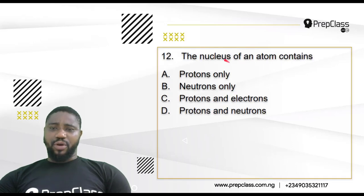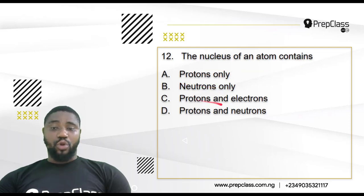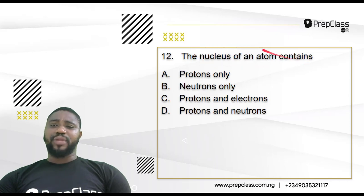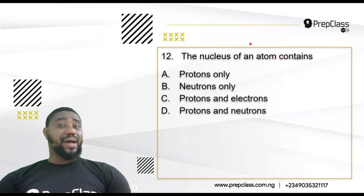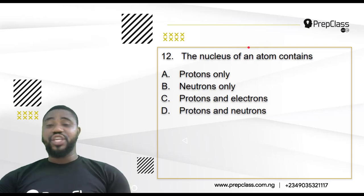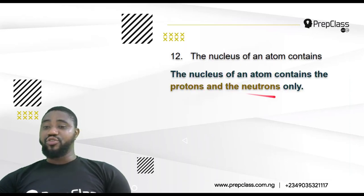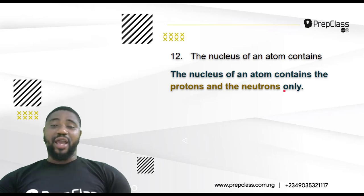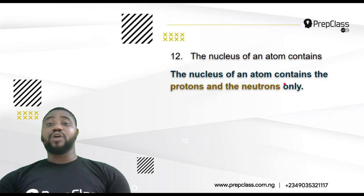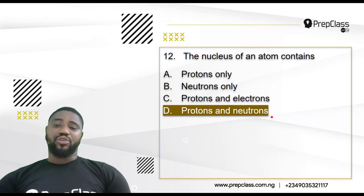Question 12: The nucleus of an atom contains — is it protons only, neutrons only, protons and electrons, or protons and neutrons? The nucleus of an atom should bring to mind the mass number. Mass number is the number of protons and neutrons in the nucleus of an atom. So the nucleus of an atom contains protons and neutrons only. The correct answer is protons and neutrons only.